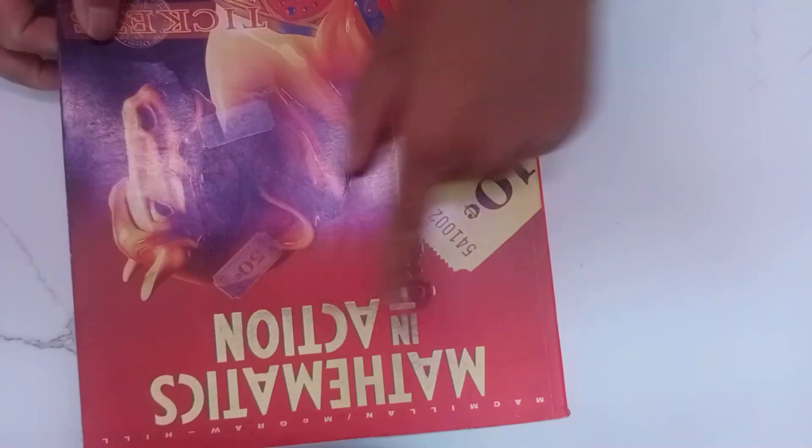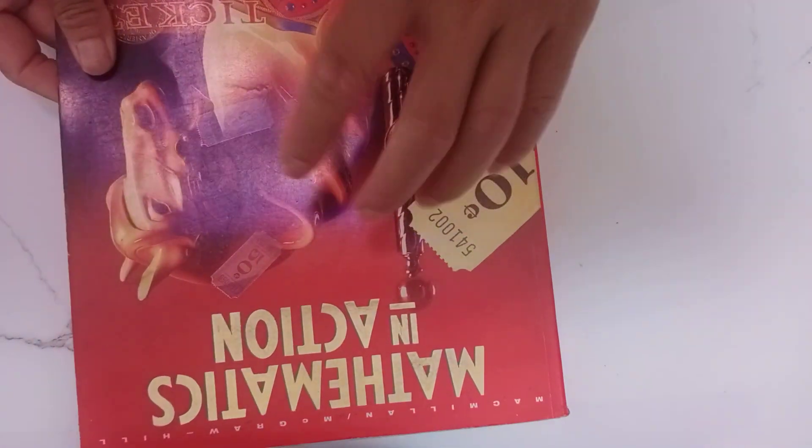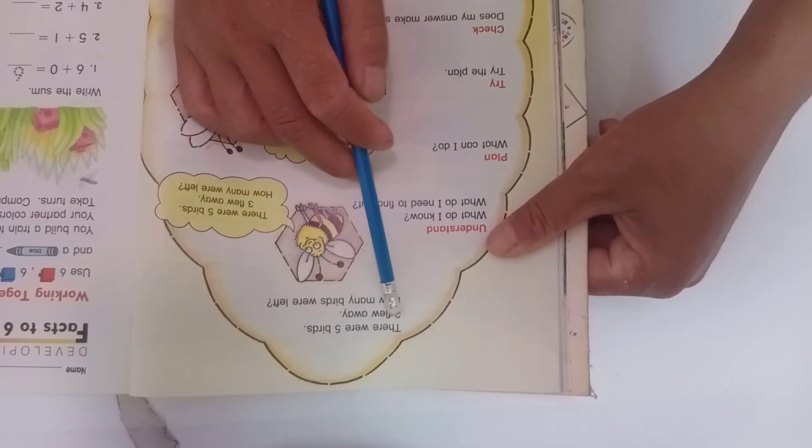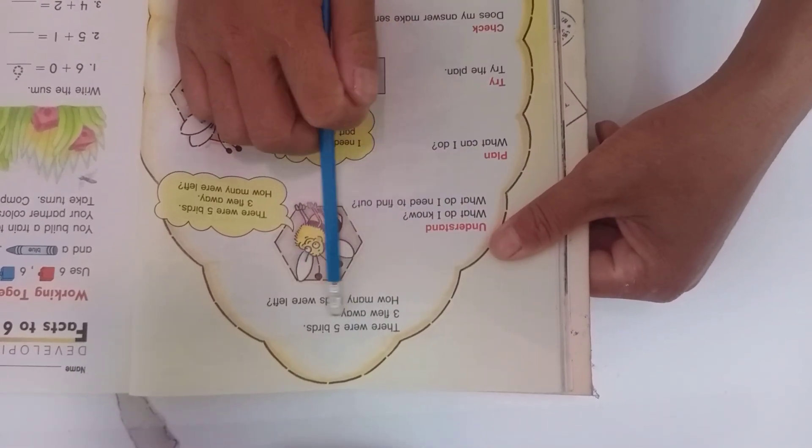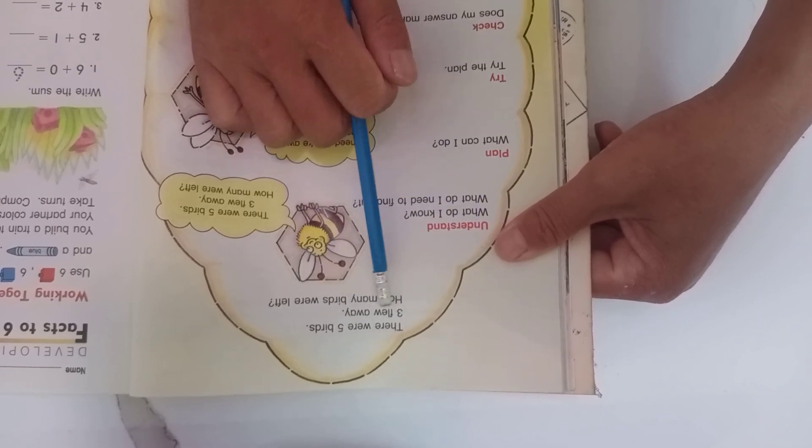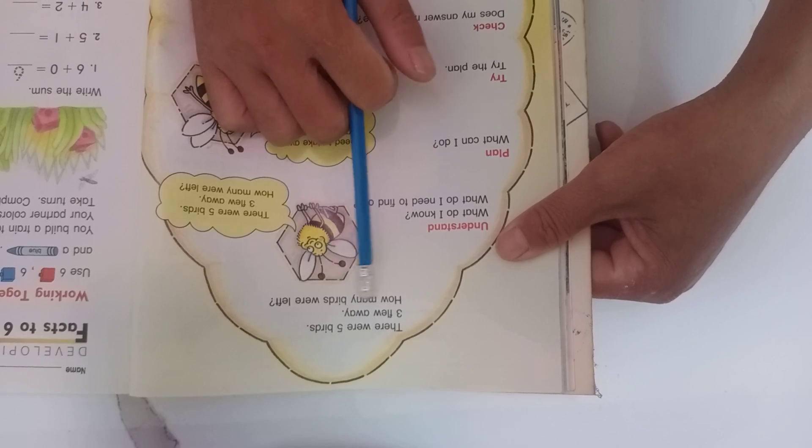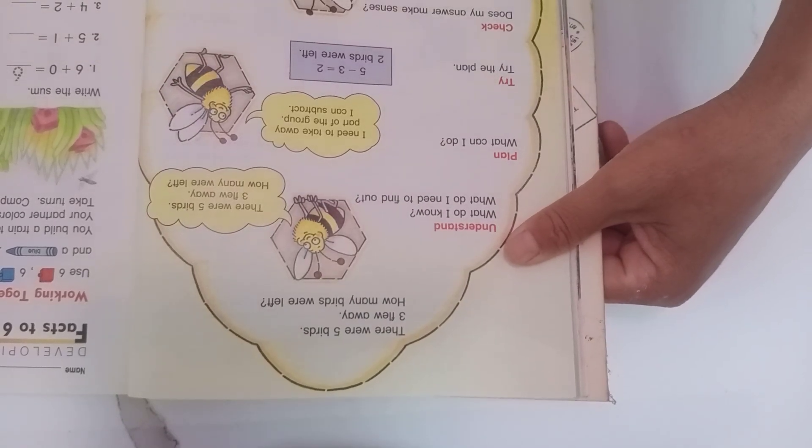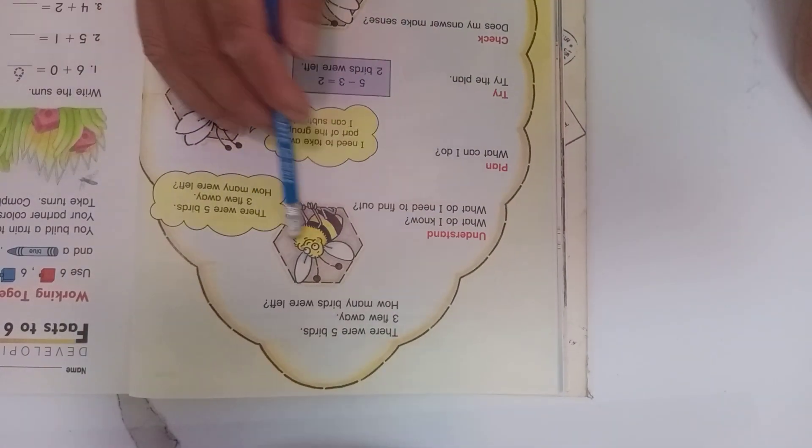Now see you again on page 18 for Mathematics in Action, the place for basic learning with mathematics. On page 18, you can see together there were five birds. Three flew away, and how many birds are left? Do you understand? How many birds are left?